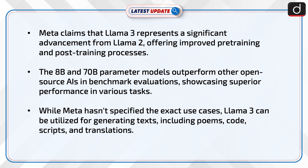Meta claims that LAMA 3 represents a significant advancement from LAMA 2, offering improved pre-training and post-training processes. The 8B and 70B parameter models outperform other open-source AIs in benchmark evaluations, showcasing superior performance in various tasks.